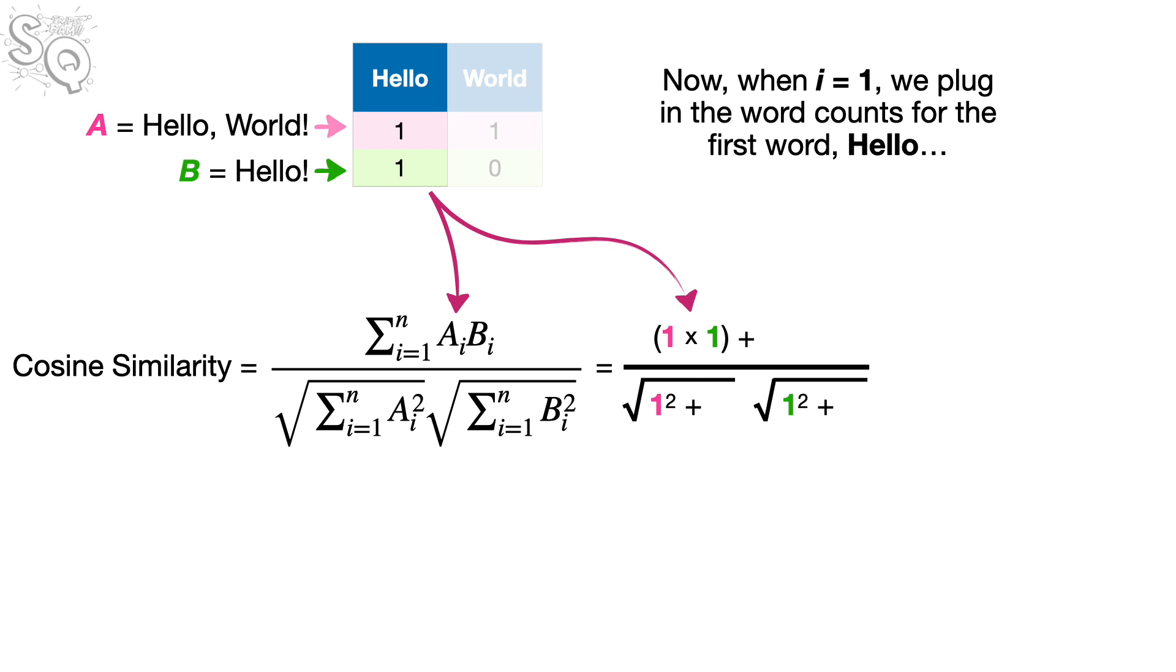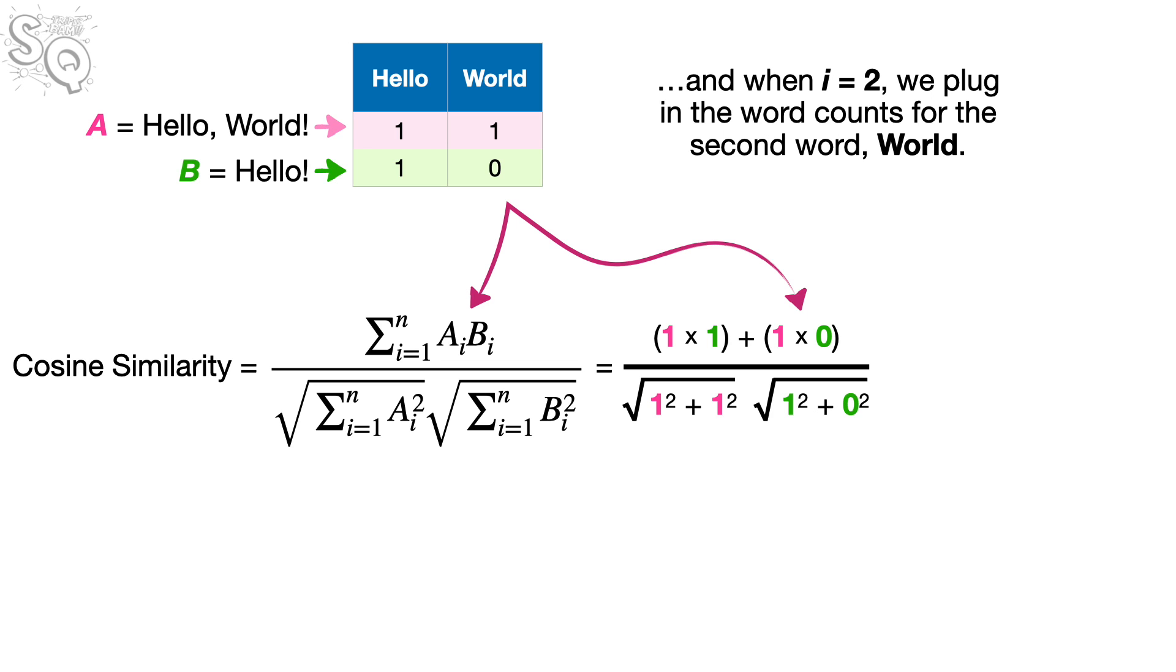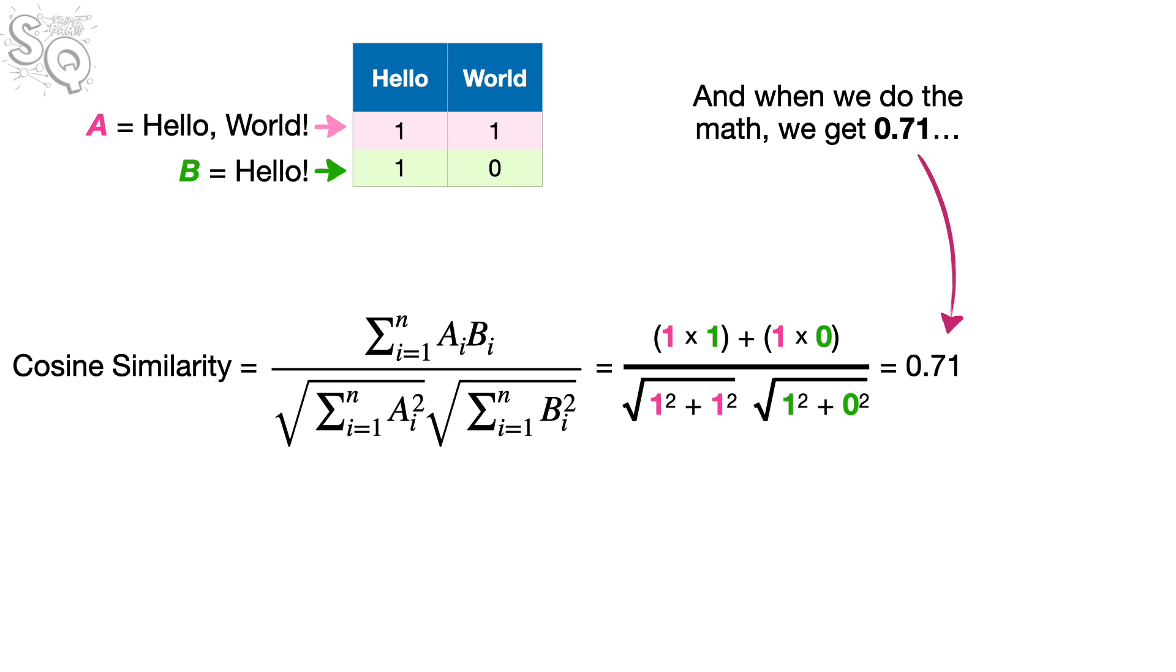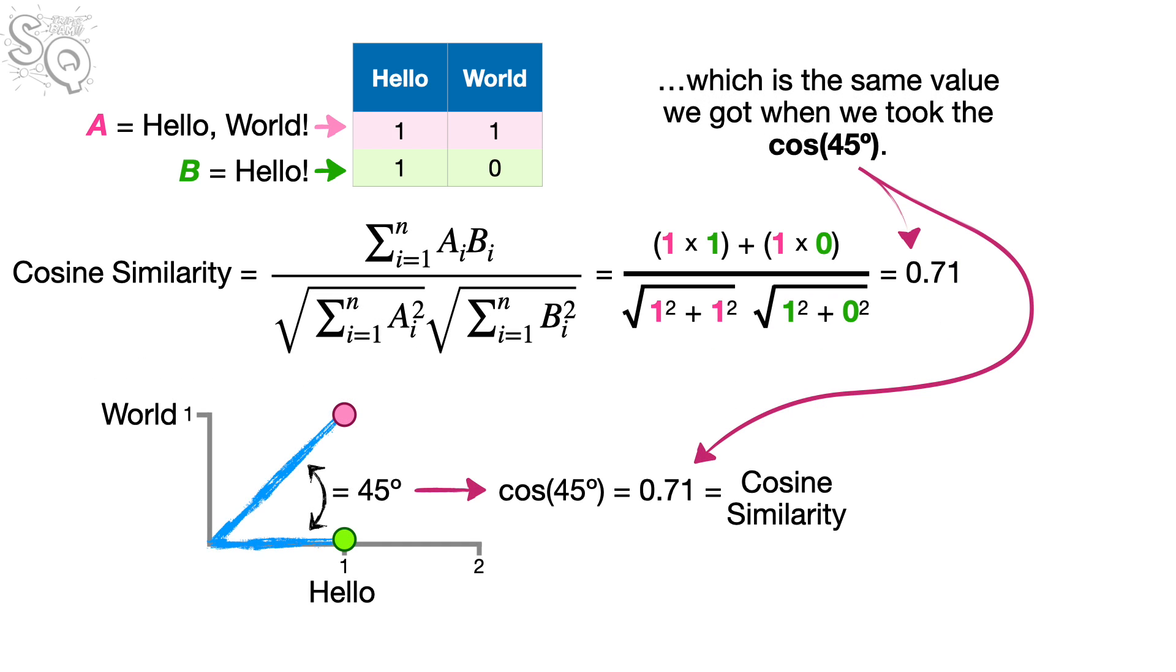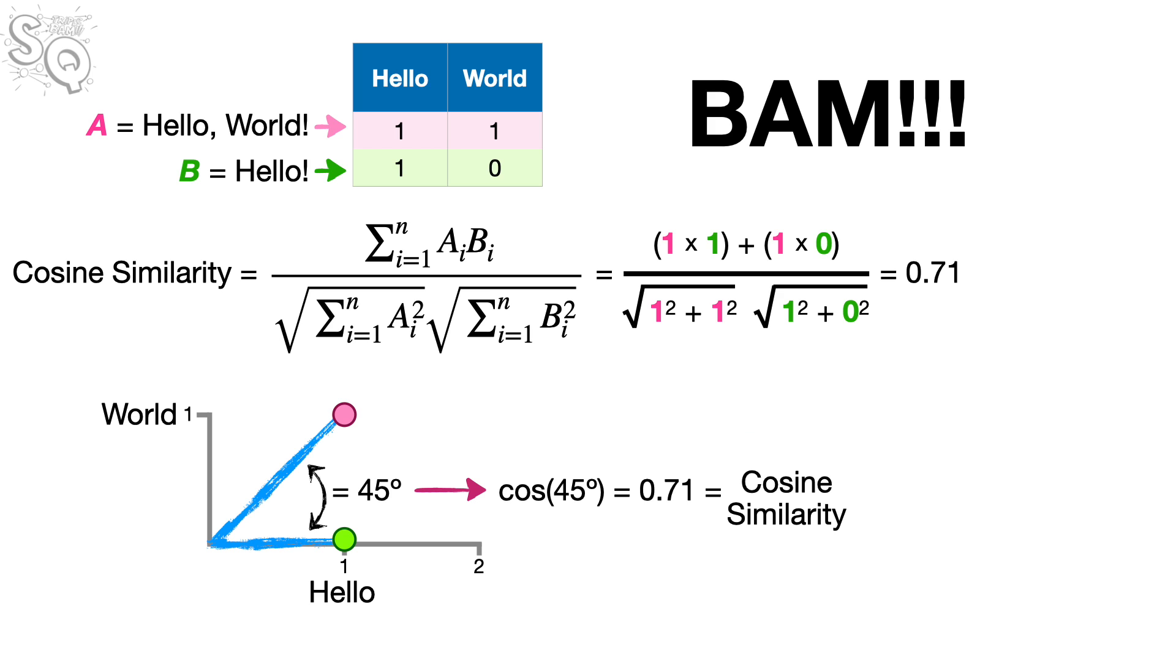Now, when i equals 1, we plug in the word counts for the first word, hello! And when i equals 2, we plug in the word counts for the second word, world! And when we do the math, we get 0.71, which is the same value we got when we took the cosine of 45 degrees. Bam!